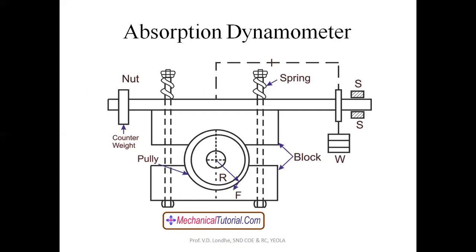Here, this is the flywheel or disc which is coming from the output shaft of the engine — a disc attached to the engine output shaft. This disc is surrounded by two wooden blocks which are in contact with the disc with the help of a nut-bolt system, and a spring is applied so as to apply uniform pressure.